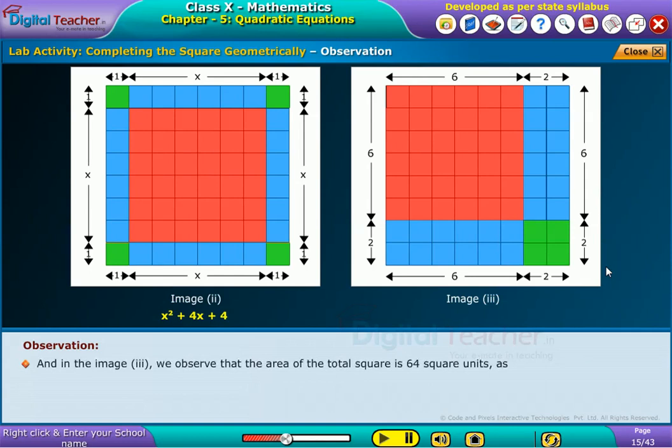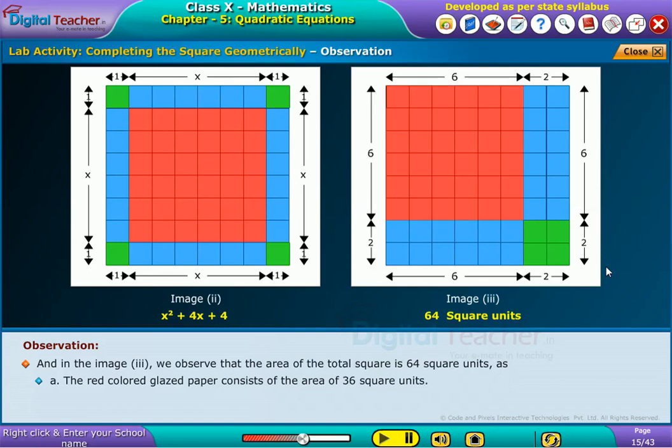And in image three, we observe that the total square is 64 square units. The red colored glazed paper consists of the area of 36 square units. The two parts of blue color glazed paper consists of area 12 plus 12, that is 24 square units. The green colored glazed paper consists of area 4 square units.